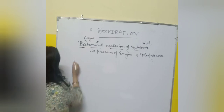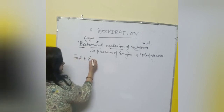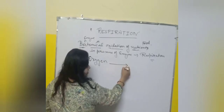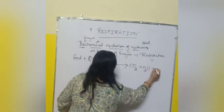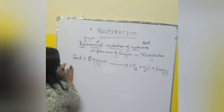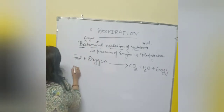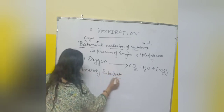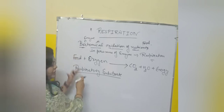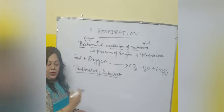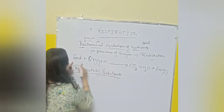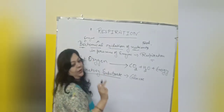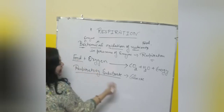What is the main reaction involved? Food — the organic matter — plus oxygen: food gets mixed with oxygen (oxidation of food), giving rise to carbon dioxide, water, and lots of energy. This is the main reaction in respiration. The organic matter which undergoes oxidative breakdown is known as the respiratory substrate. For example, glucose — a carbohydrate — is the respiratory substrate.